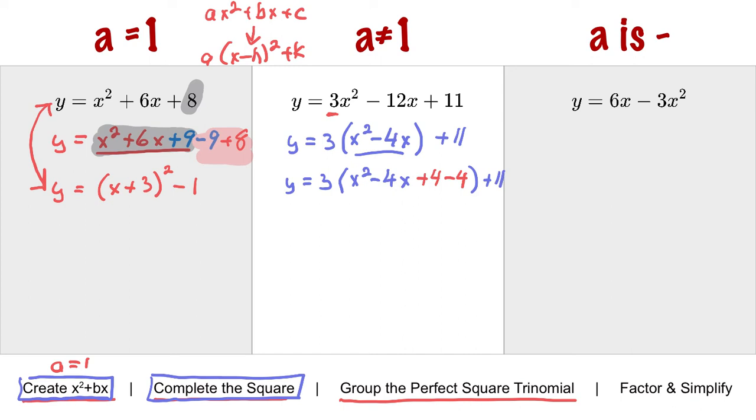So again, I haven't changed the value of the equation in the third step from the second or from the first, but it now does look different. So now my next step is to group the perfect square trinomial. There it is, and then factor. So factoring it becomes x, take the second term, half it, follow the sign, square.